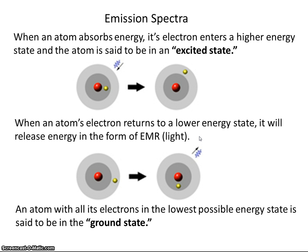An atom with all of its electrons in the lowest possible energy state is said to be in the ground state. So we have two new terms: excited state — that's when an atom has gained energy and its electrons are in higher energy levels — and ground state — that's when an atom has all of its electrons in the lowest possible energy level.